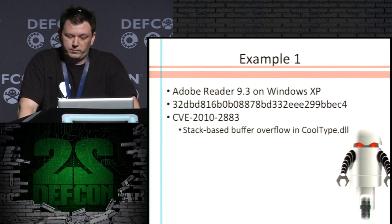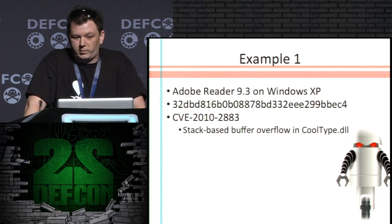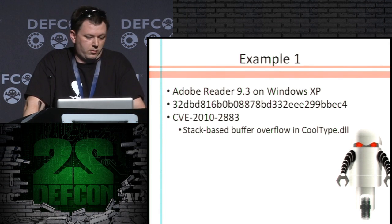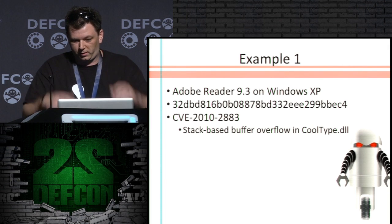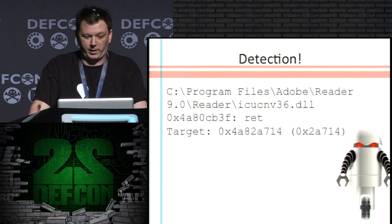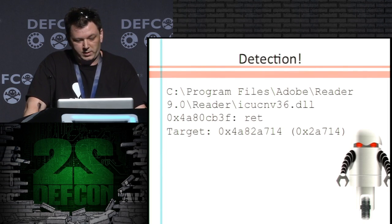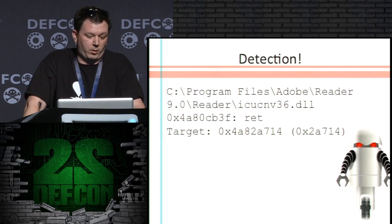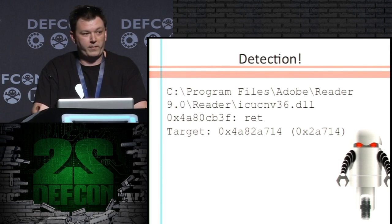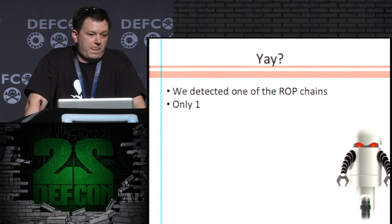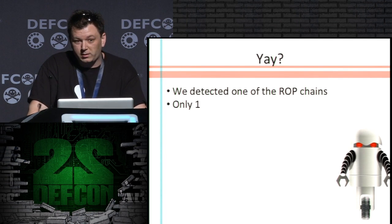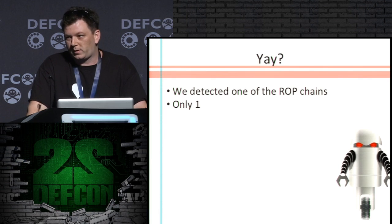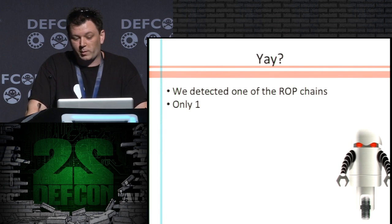Example one: Adobe 9.3, Windows XP — there's the hash. This is an old exploit obviously. So we run it, wave our hands, and voila — we have a detection. You can see the address where we're coming from and where we're going to, and in parentheses is the offset. We found one detection. That was disappointing — all you need is to detect one, but I always want more.